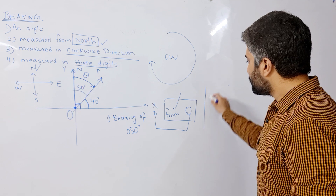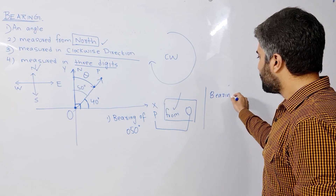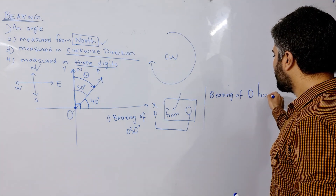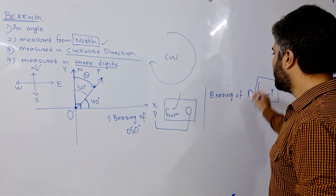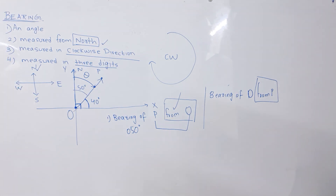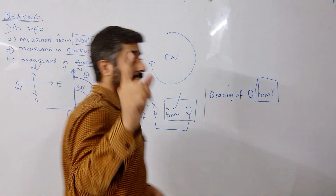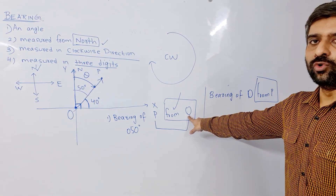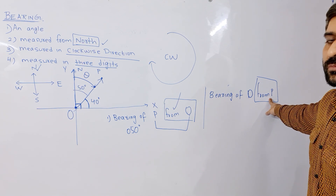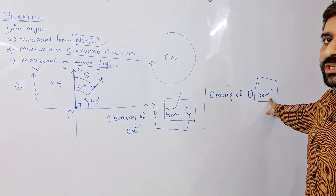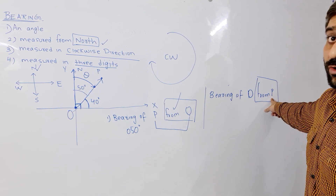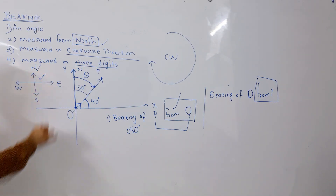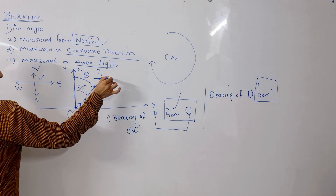Case number 2 is the bearing of O from P. Now this is the point where you need to know the difference. Previously, from O we plotted north at O. In this case it says from P, so our north will be plotted at P. From P means draw north at P — draw the full compass directions at P, marking east, west, north upward, and south.